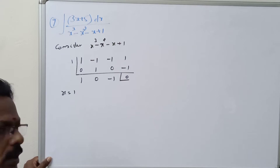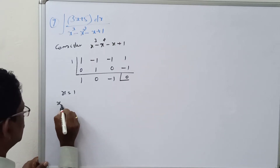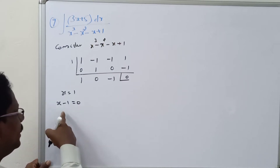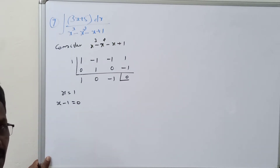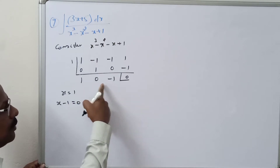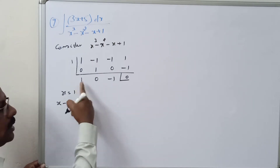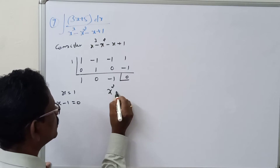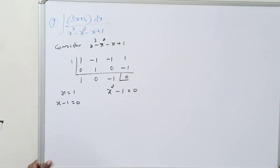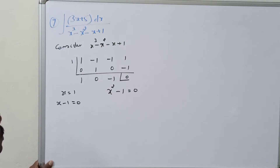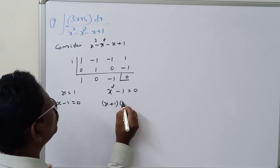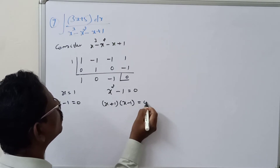So one factor is x = 1, which gives the linear factor (x - 1) = 0. From the remaining quotient we get x² - 1 = 0, and x² - 1 factors as (x + 1)(x - 1) = 0. So the full factorization of the denominator is (x + 1)(x - 1)².